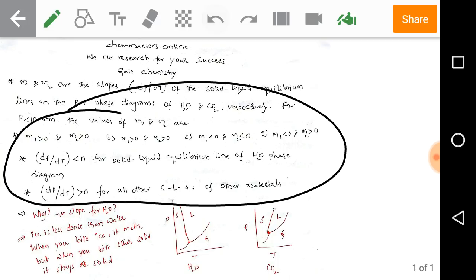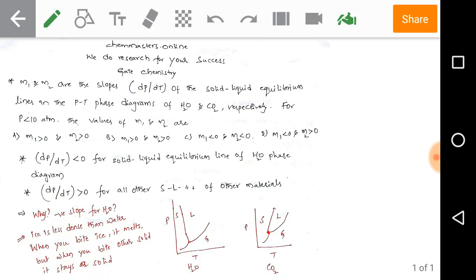And if we take dp by dt, it is always greater than 0 for all other solid-liquid equilibrium lines of other materials. From this we can directly conclude the answer: M1 is less than 0 and M2 is greater than 0, so that is answer D.